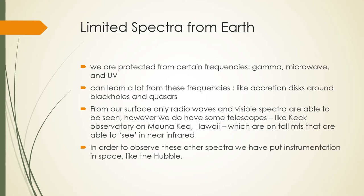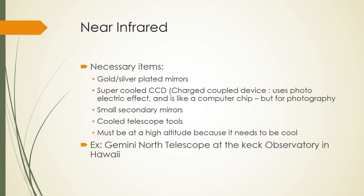To observe other spectra we have to put instrumentation in space, like the Hubble telescope. For near-infrared observation, you need gold or silver-plated mirrors, super-cooled charged-couple devices — which also use the photoelectric effect and are similar to a computer chip — known as CCDs. You also need small secondary mirrors and cooled telescope tools, which is why these observatories are at high altitude. An example is the Gemini North Telescope at the Keck Observatory in Hawaii.